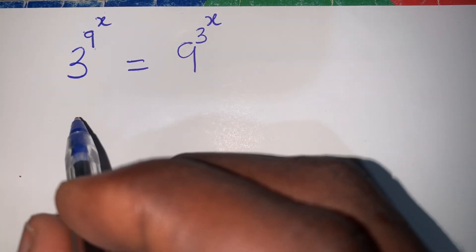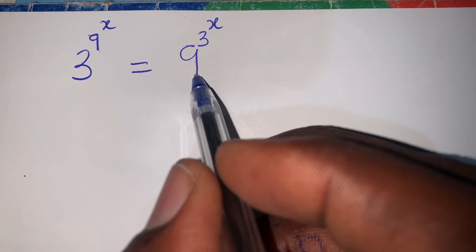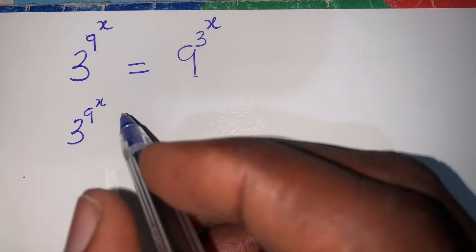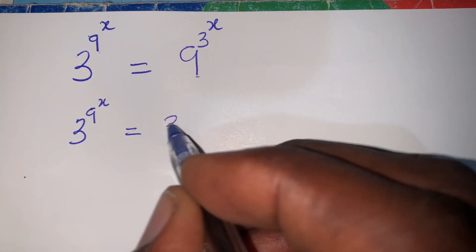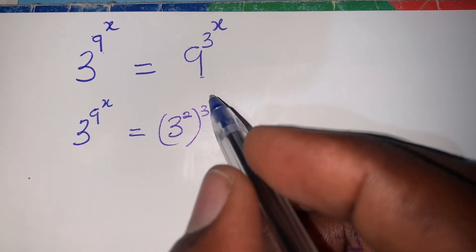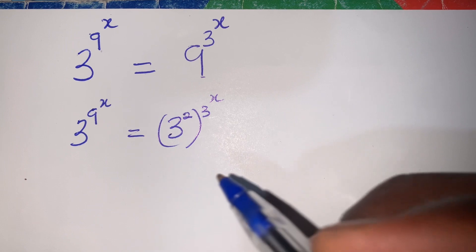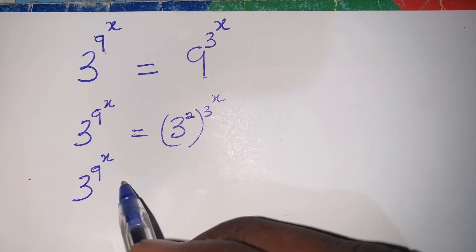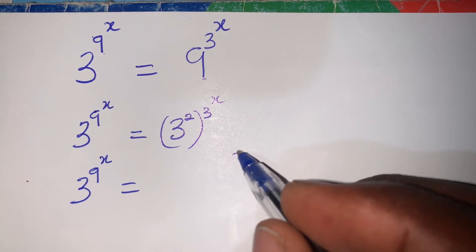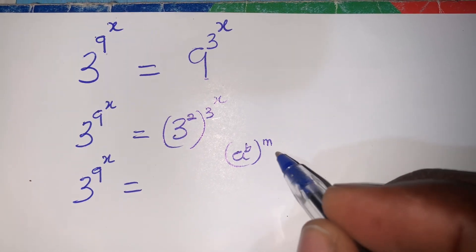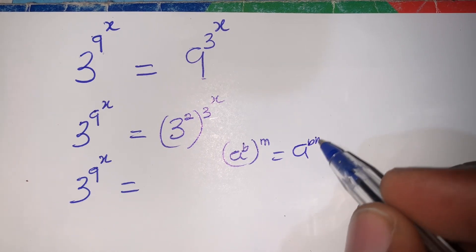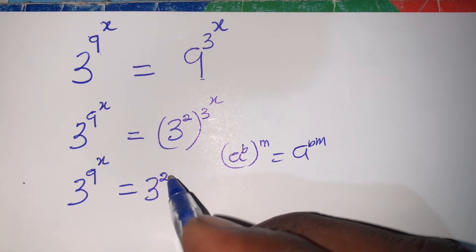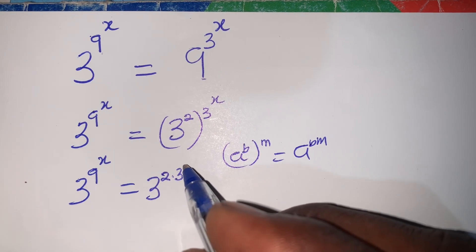From here it's very simple. I'll start by changing this 9 to index form, so this will be 3 exponent 2, raised to the exponent 3^x, and this is equal to 3 exponent 2 in brackets exponent 3^x. Per the exponent law, a^b raised to m equals a^(b·m), so applying this I'll have 3 exponent 2 times 3^x.